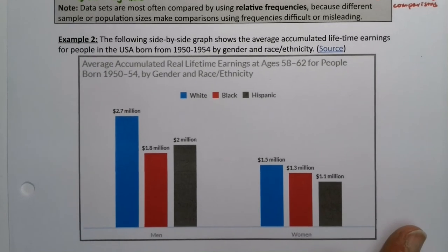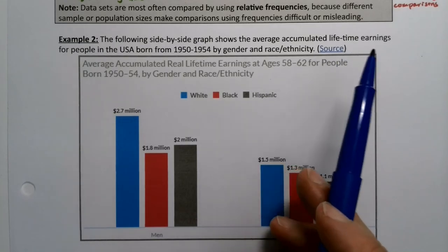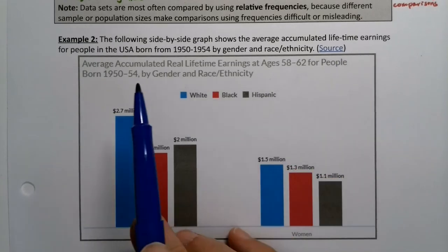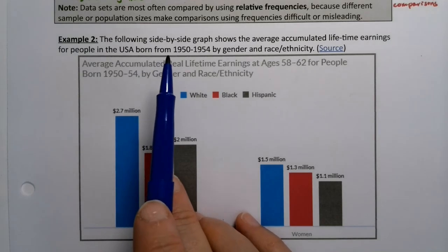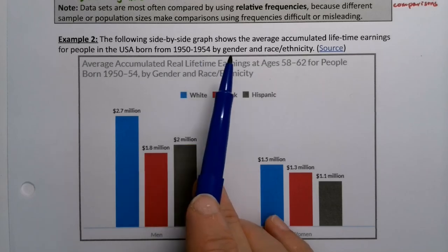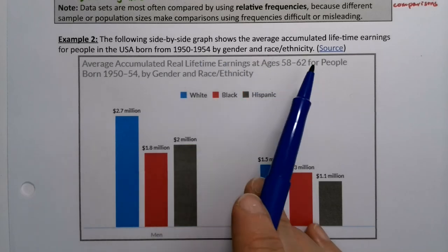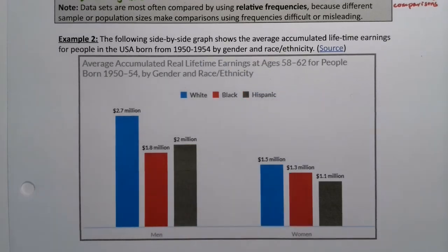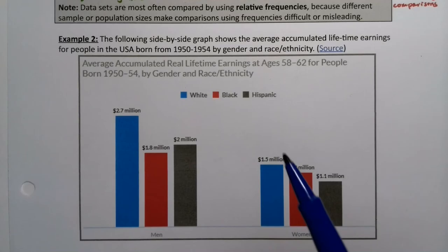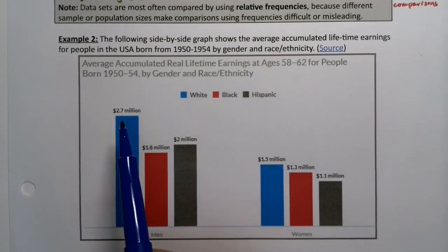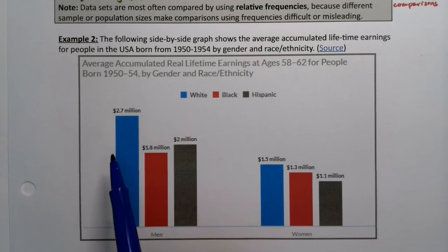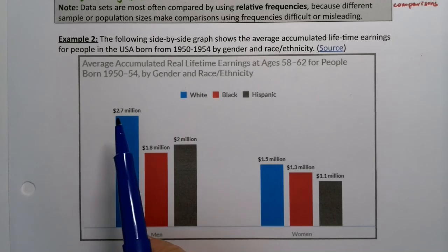The following side-by-side graph shows the average accumulated lifetime earnings for people in the USA born from 1950 to 1954, by gender and race/ethnicity. This is real data from real studies. It uses frequency in the sense that the count is expressed in millions of dollars.